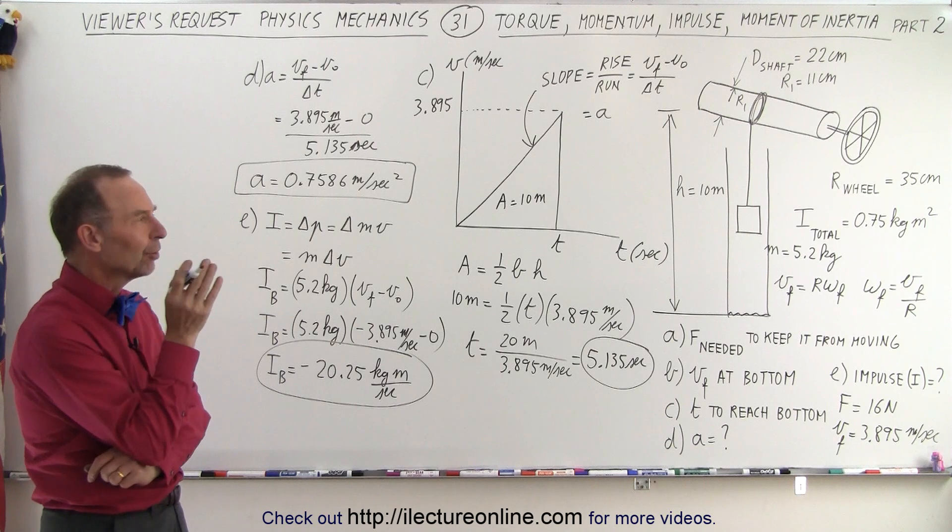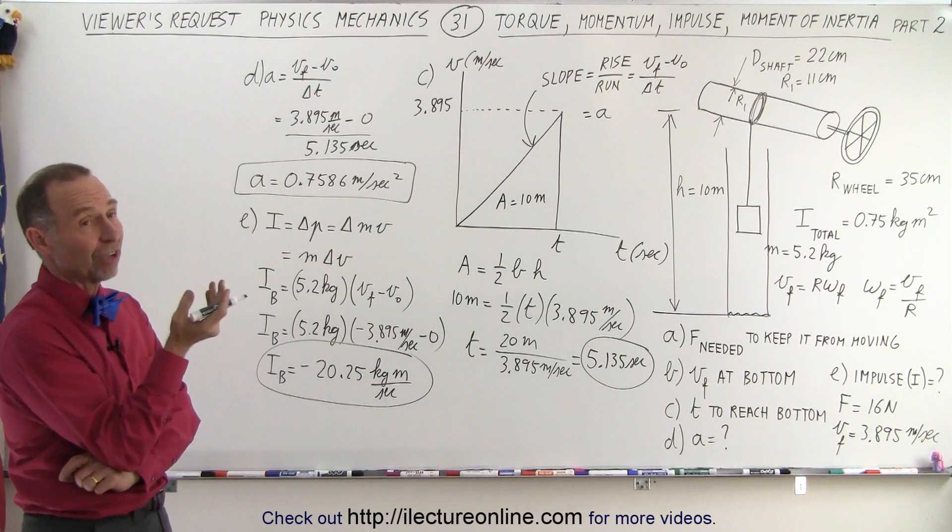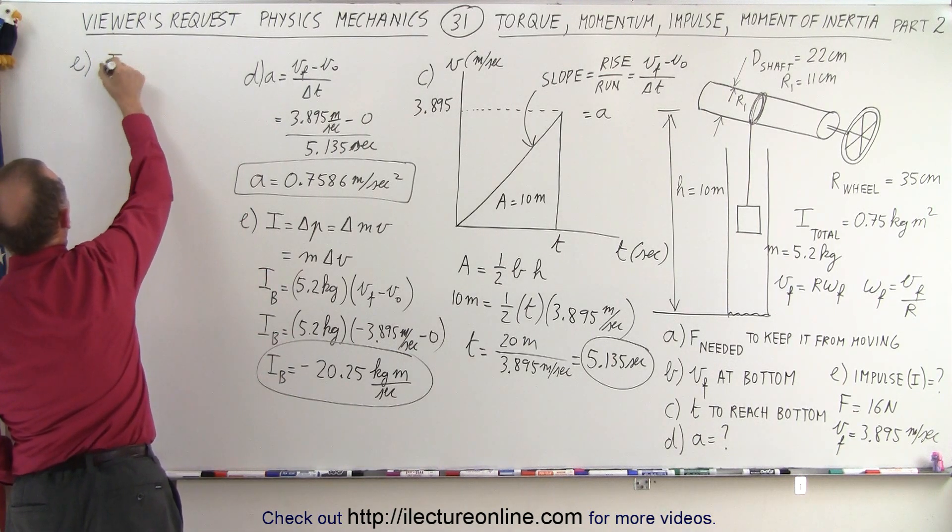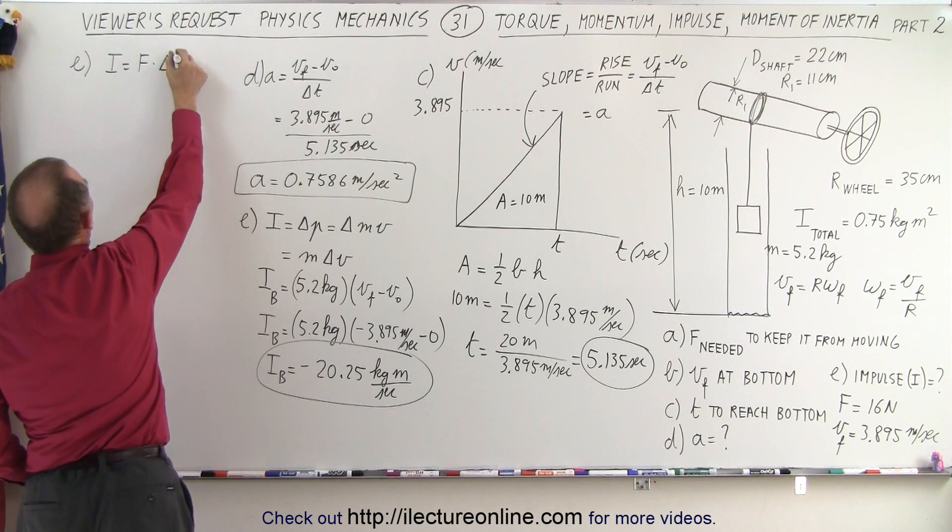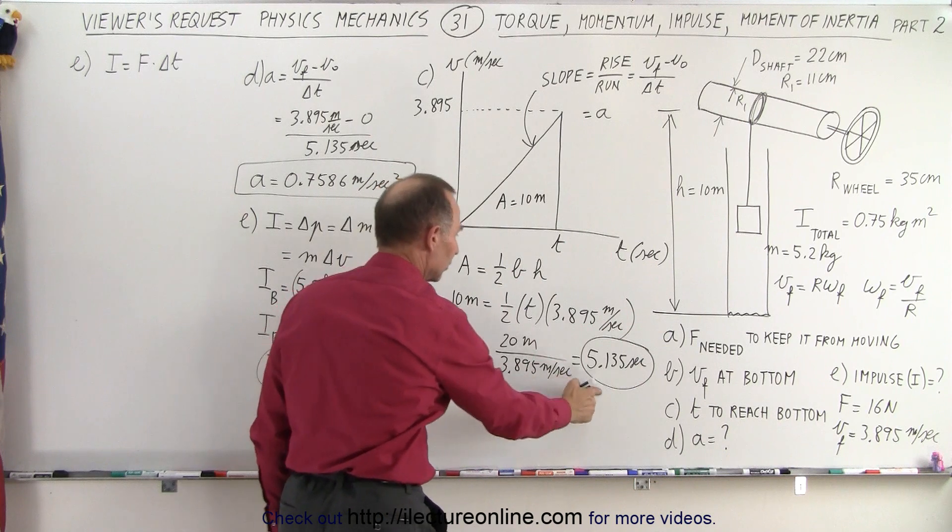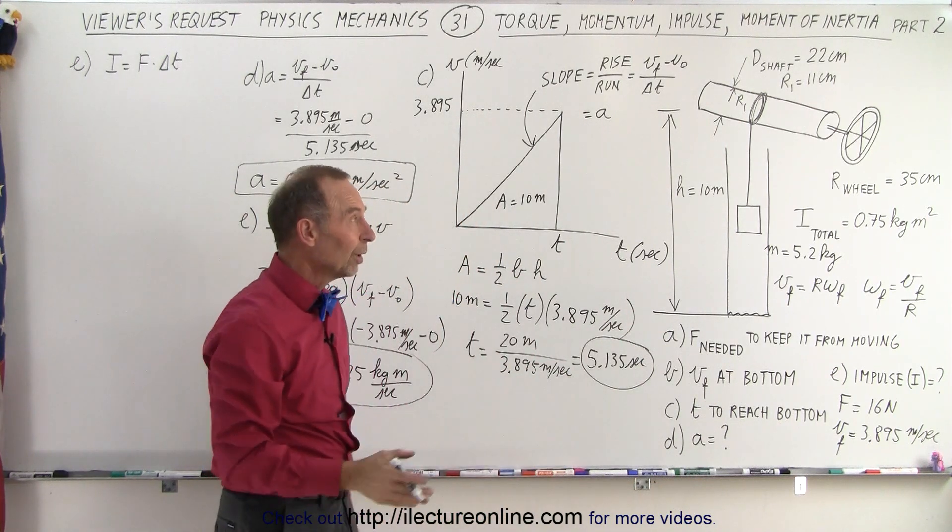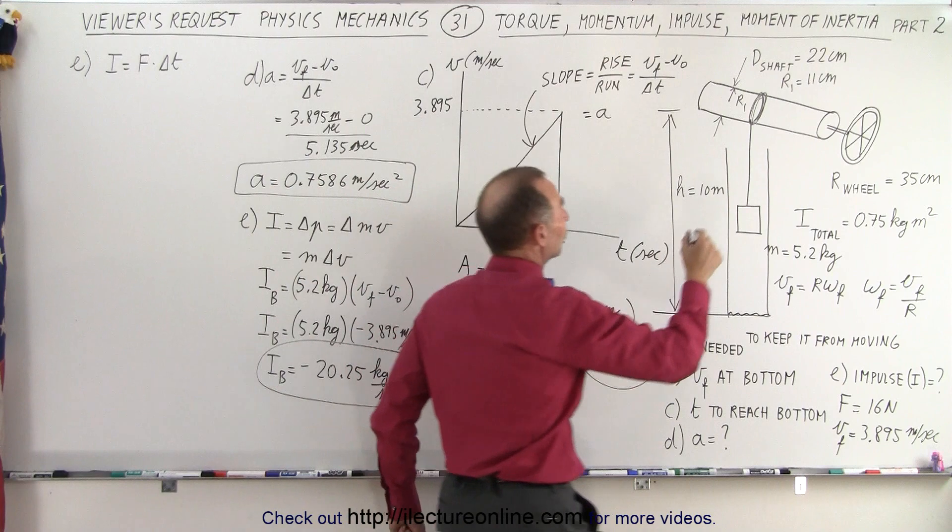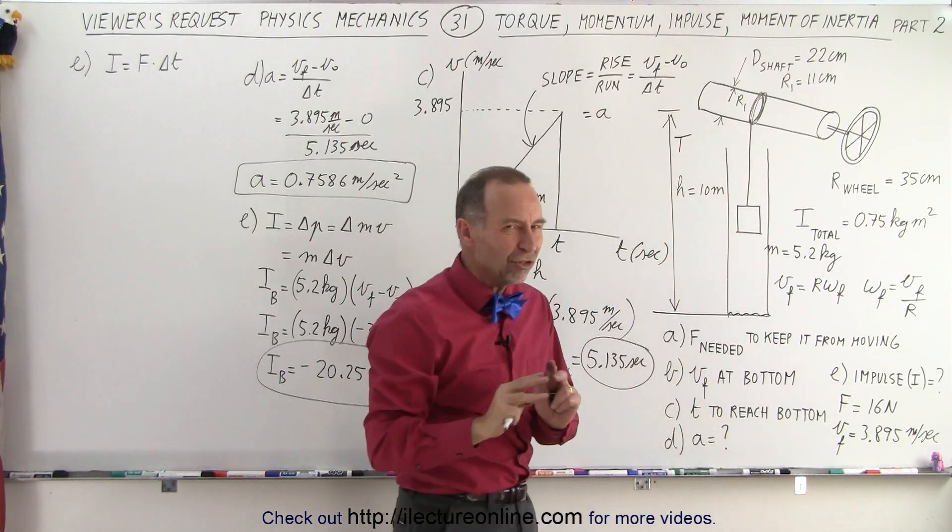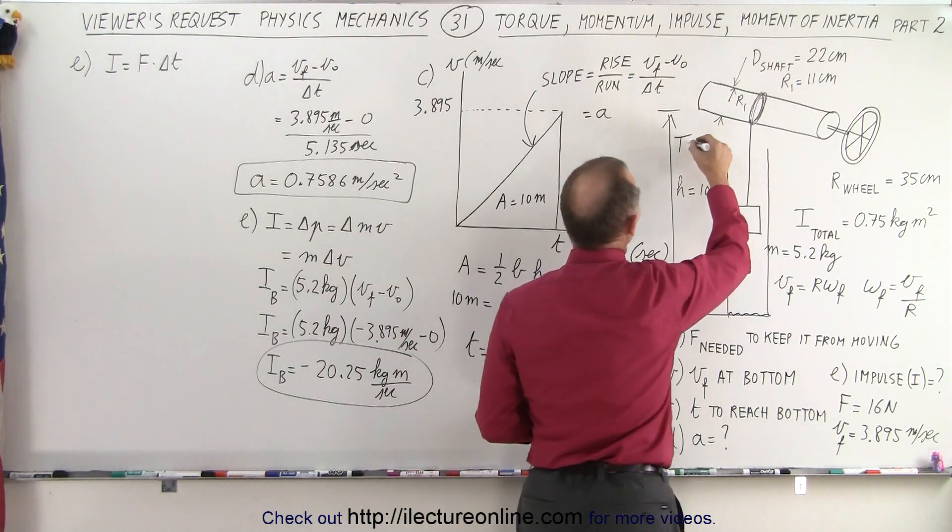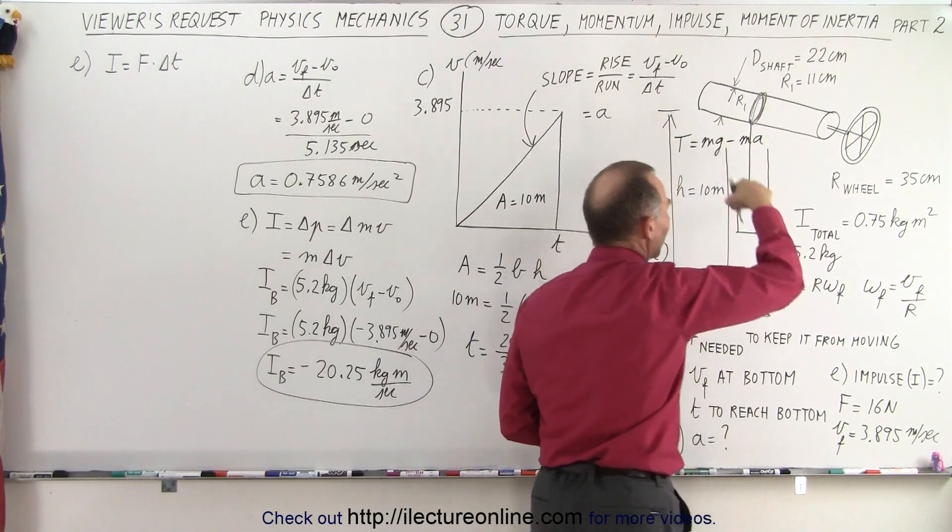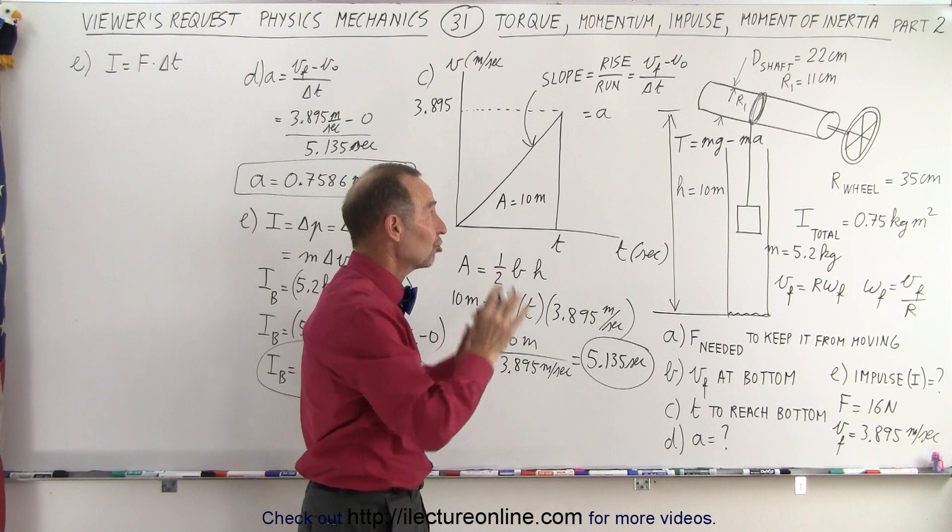Now we need the impulse of the shaft, or the impulse on the shaft. So we can use the second definition. So continuing with E, I is equal to force times delta T. And we know how long it takes to reach the bottom. We figured that out right here, so we know the delta T. What is the force on the shaft? Now the force on the shaft is going to be the tension. But in this case, the bucket is moving, so the tension is not equal to the weight of the bucket. The tension is going to be equal to the weight of the bucket minus the mass times acceleration, since the acceleration is downward. So that's the tension, that's the force on the shaft.